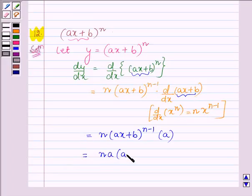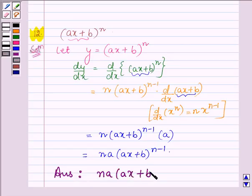Thus on differentiating the given function, its derivative is NA times (AX + B) raised to the power N minus 1.